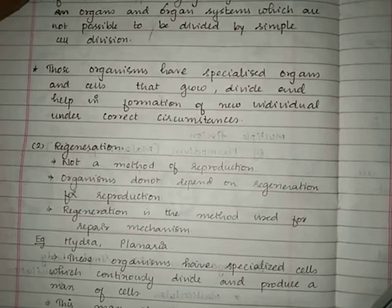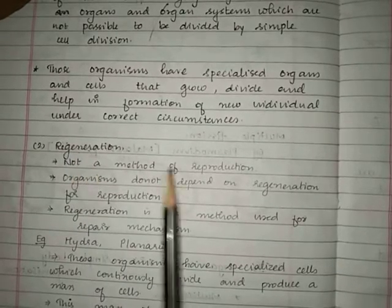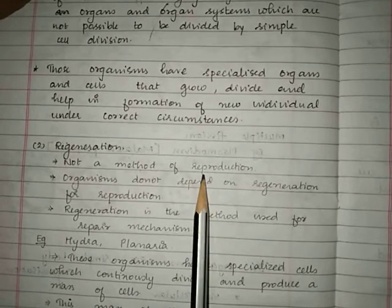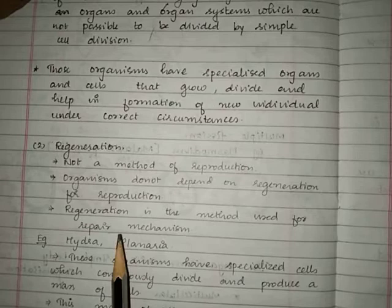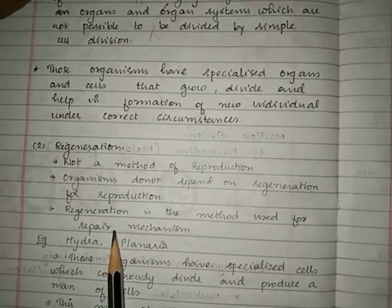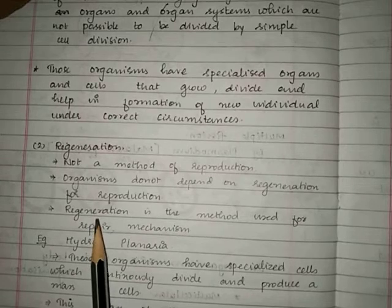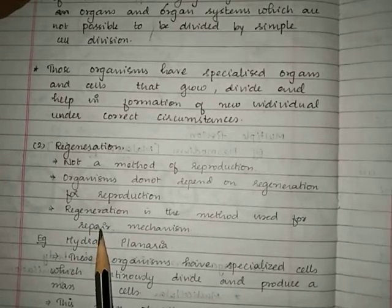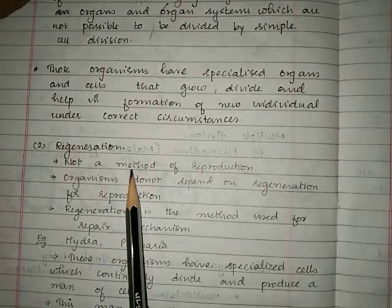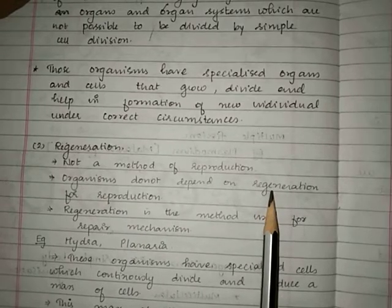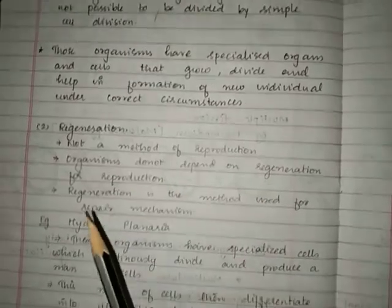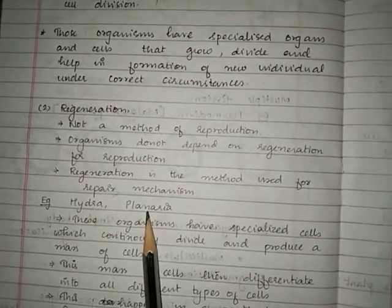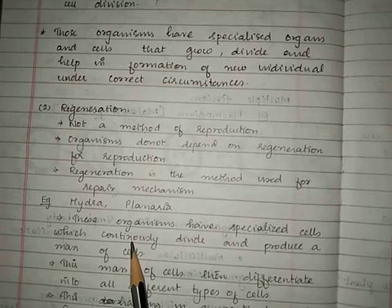The next method seen in organisms with simple body organization is regeneration. Regeneration is not primarily a method of reproduction — it is mainly a repair mechanism. If some body parts are lost — for example when escaping a predator — regeneration is used to repair the lost body parts. Examples are Hydra and Planaria, which have specialized cells that can continuously divide and produce a mass of cells.